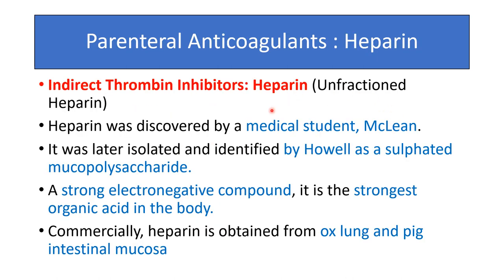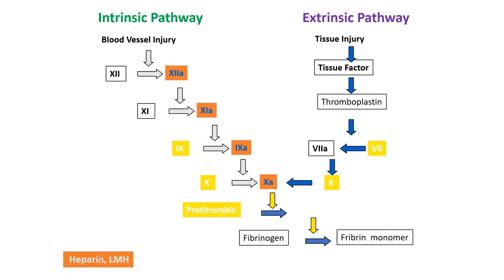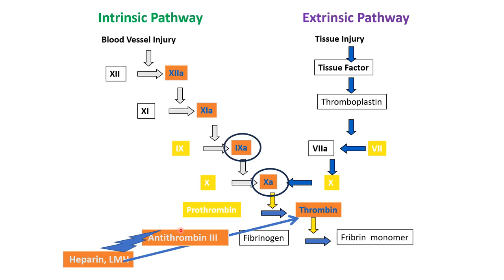Unfractionated heparin is a parenteral, indirect thrombin inhibitor. It was discovered by medical student Macklin and later isolated and identified by Howell as a sulfated mucopolysaccharide. It is a strongly electronegative compound and the strongest organic acid in the body. Commercially it is available from ox lung and pig intestinal mucosa. Heparin binds with antithrombin 3, and this complex then binds with thrombin and factors 10a, 9a, 11a, and 12a, inactivating all coagulating factors of the intrinsic and common pathways, but not the extrinsic pathway.